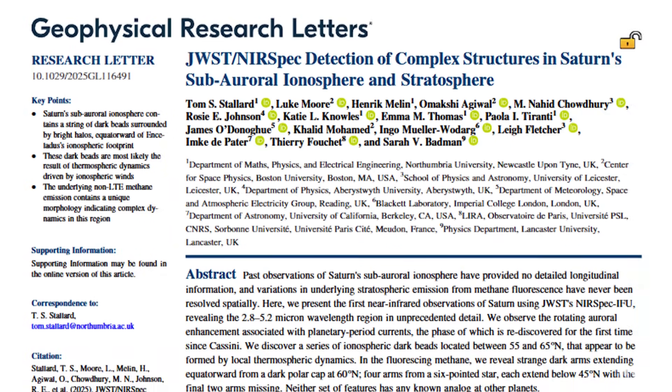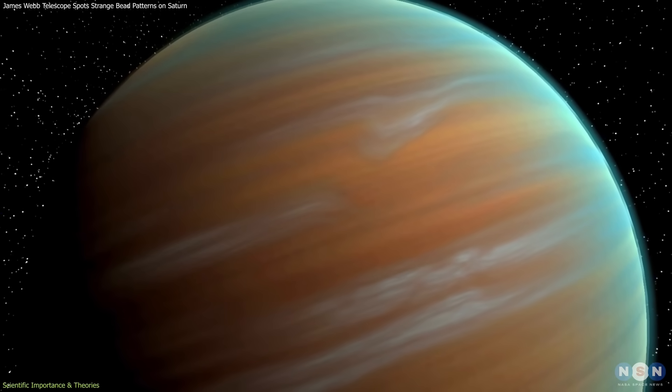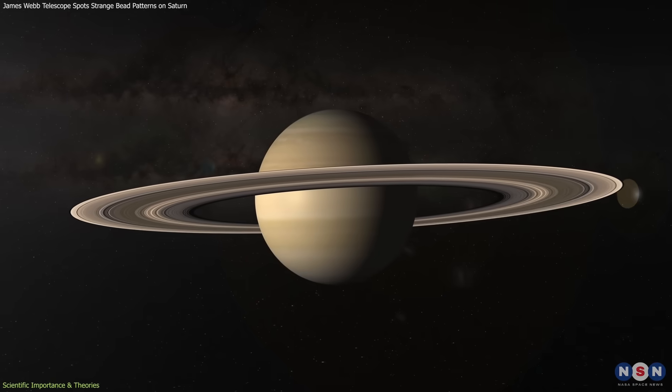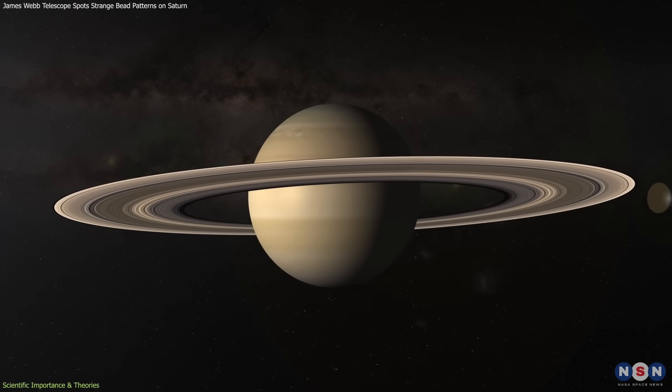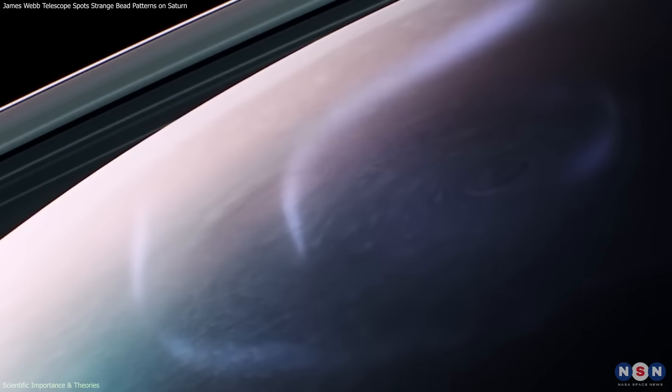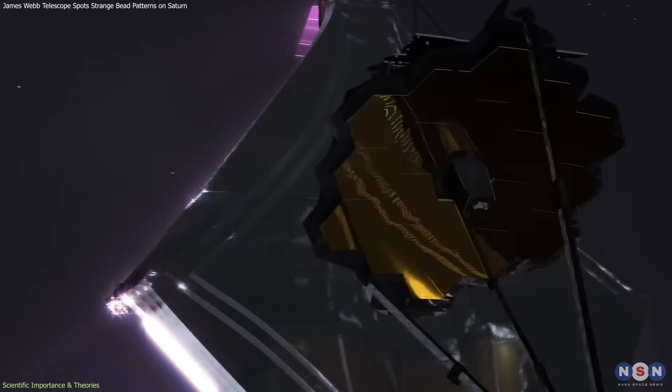The findings matter because they challenge long-held assumptions about gas giant atmospheres. For years, scientists viewed Saturn's upper layers as relatively smooth and featureless, shaped mainly by large-scale circulation and auroral energy. Webb has shown otherwise.